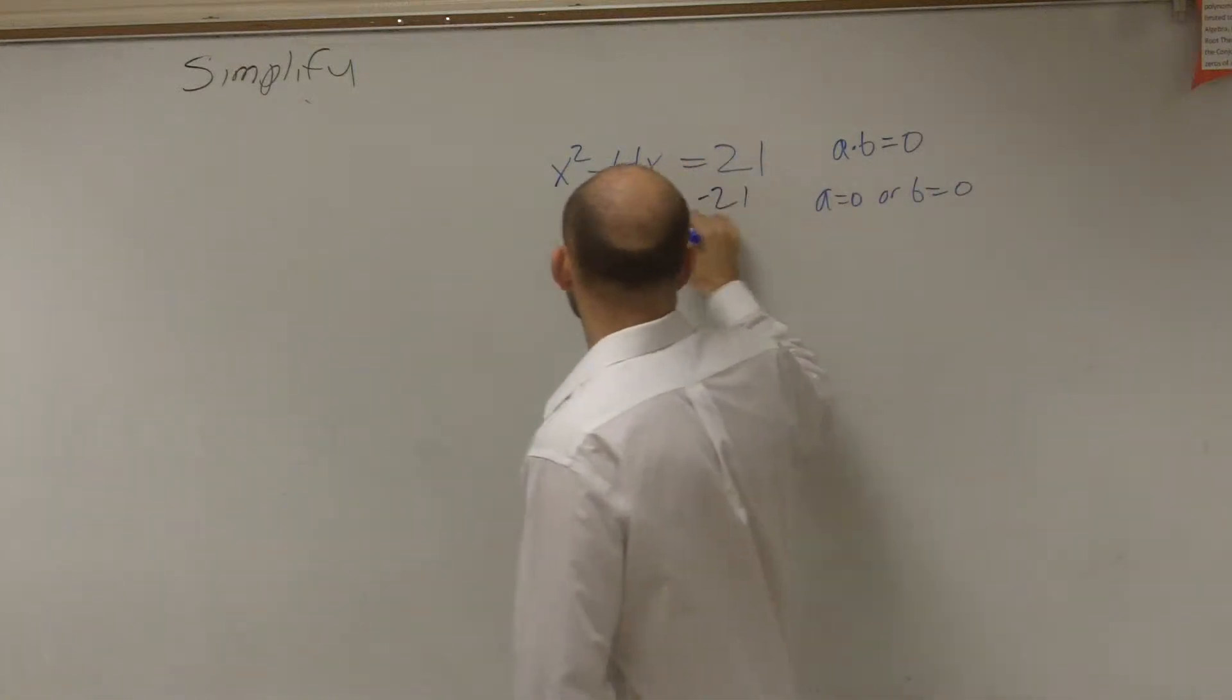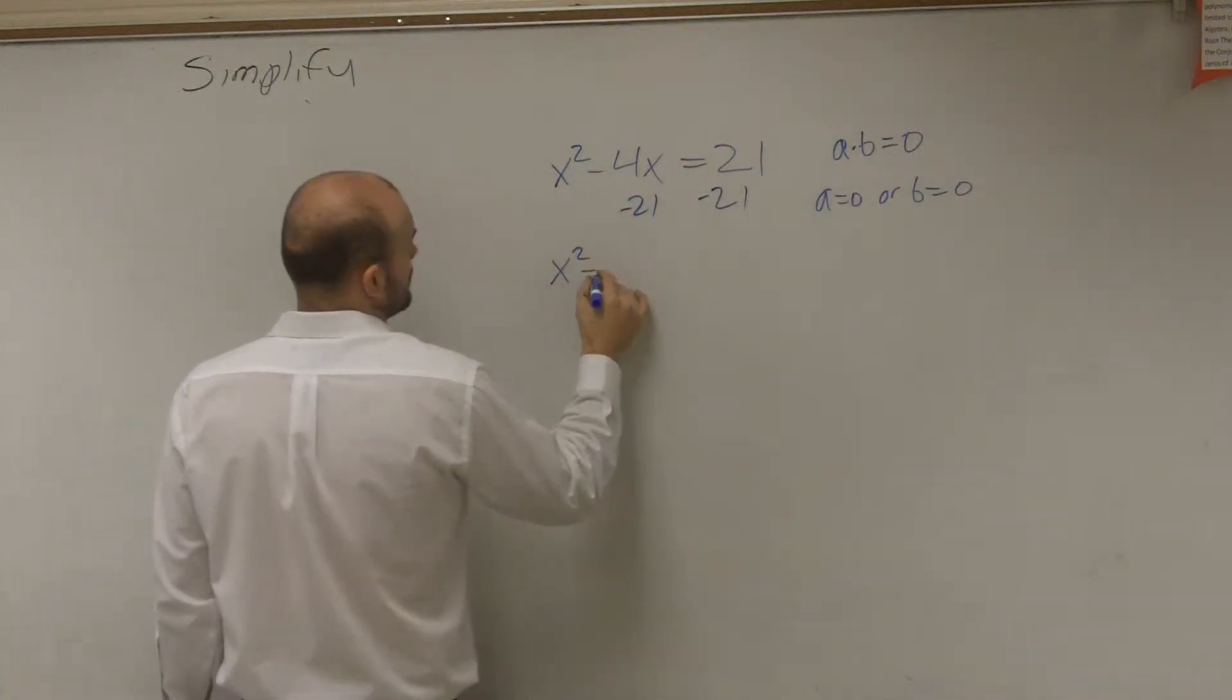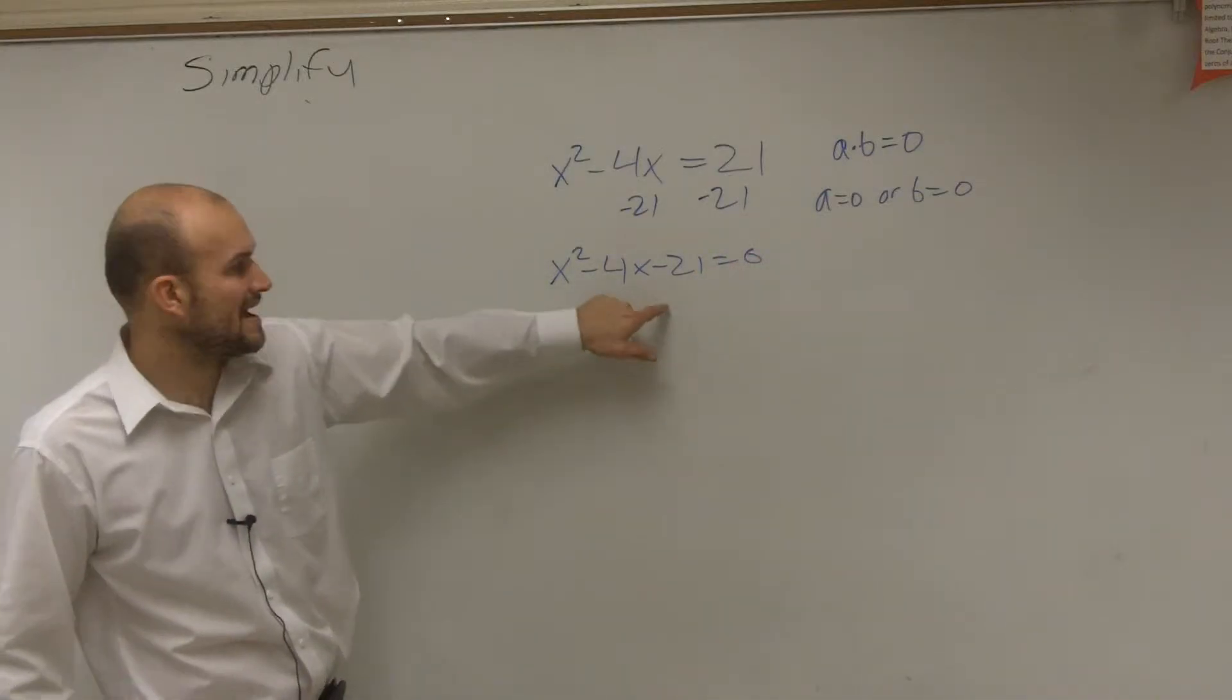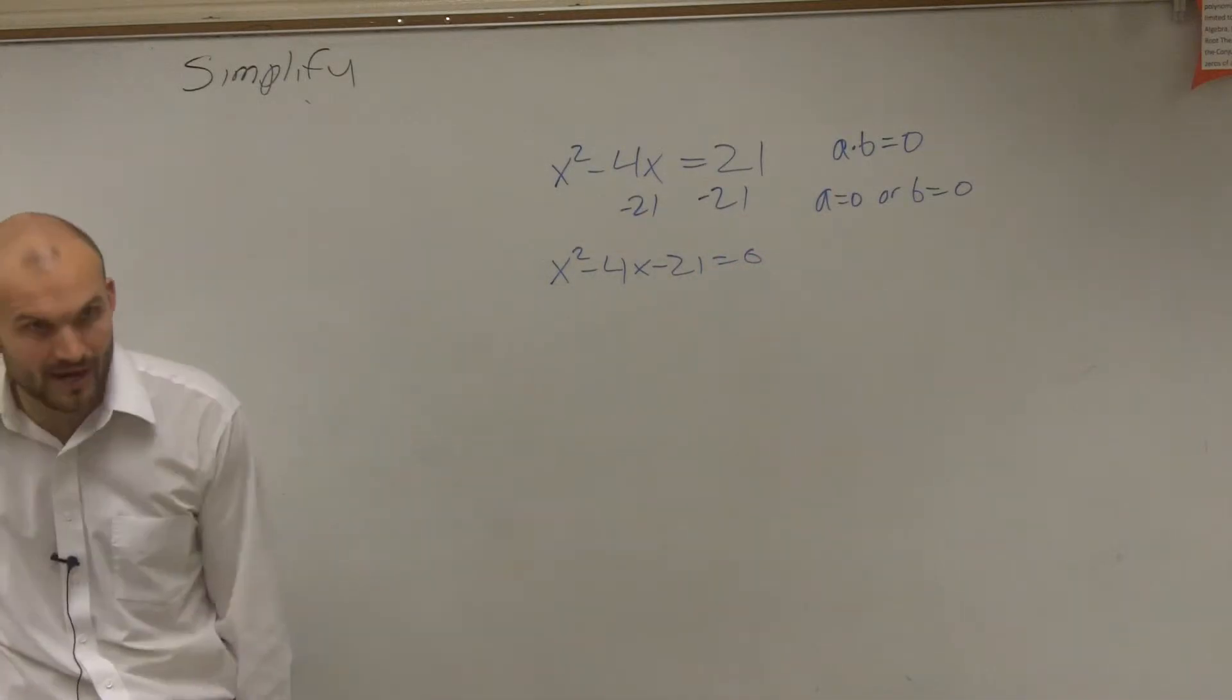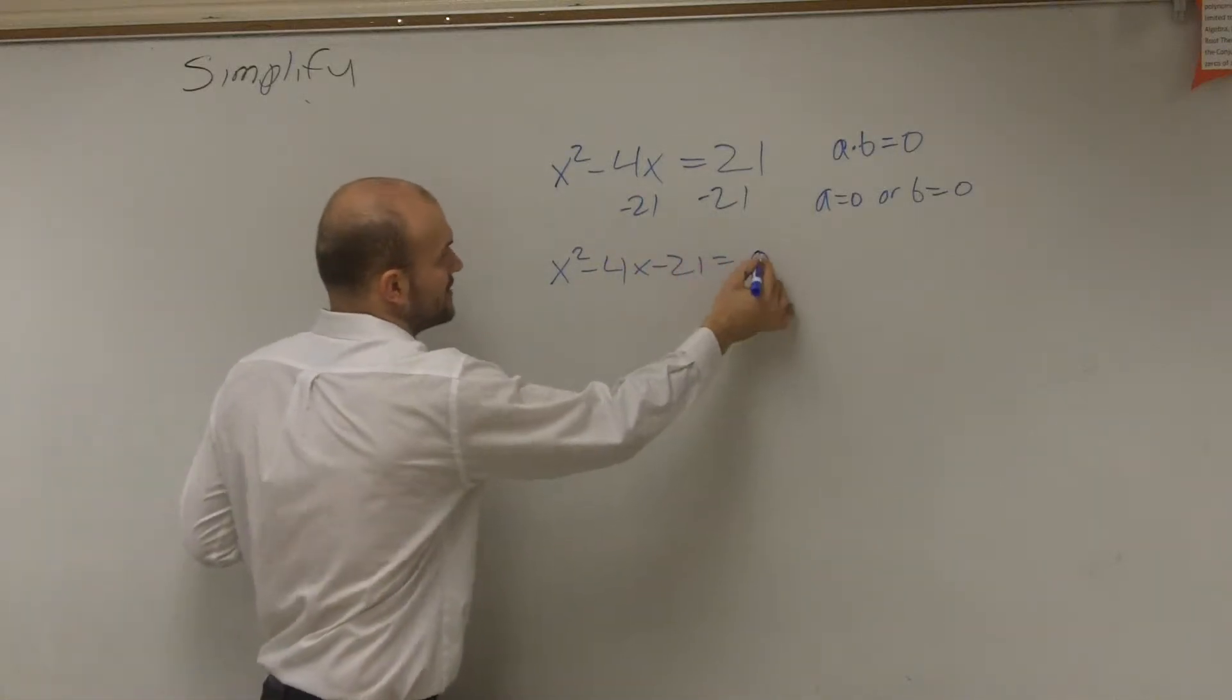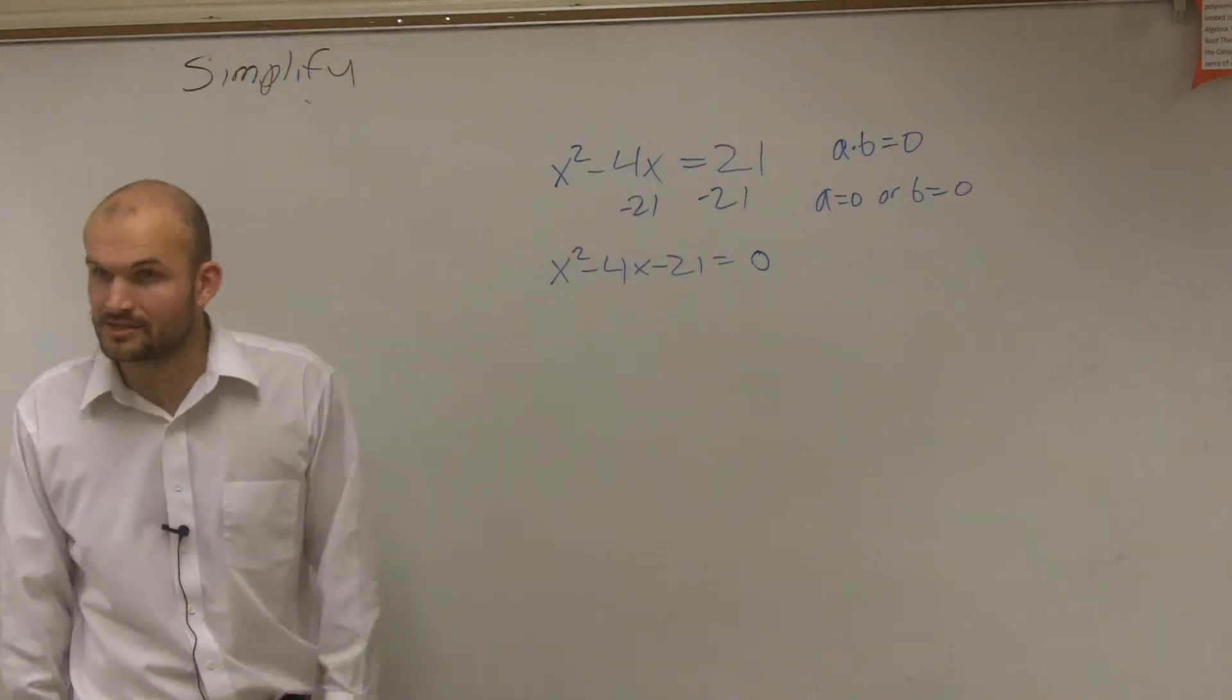So to do that, subtract 21 on both sides. Now, can we factor this? And this is what we've been practicing over and over again - factoring. So there's a couple different methods we could do this for.